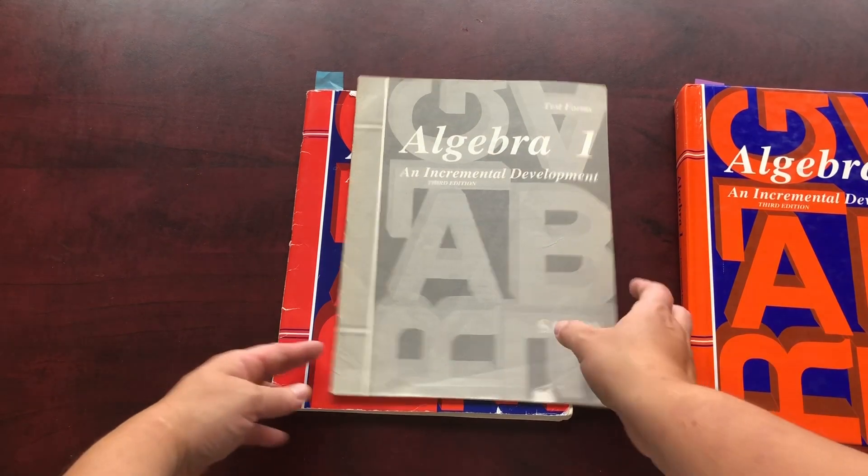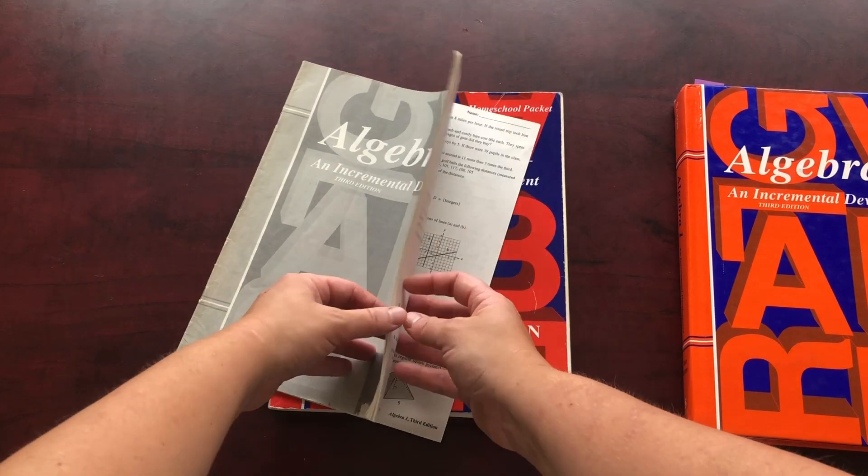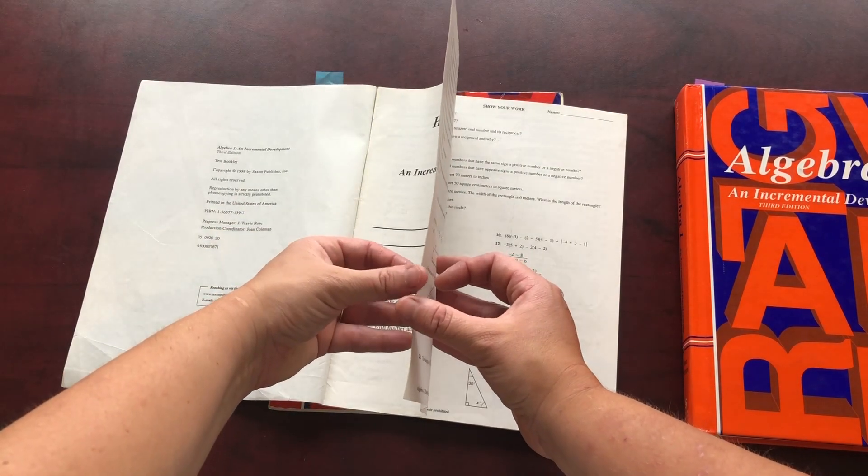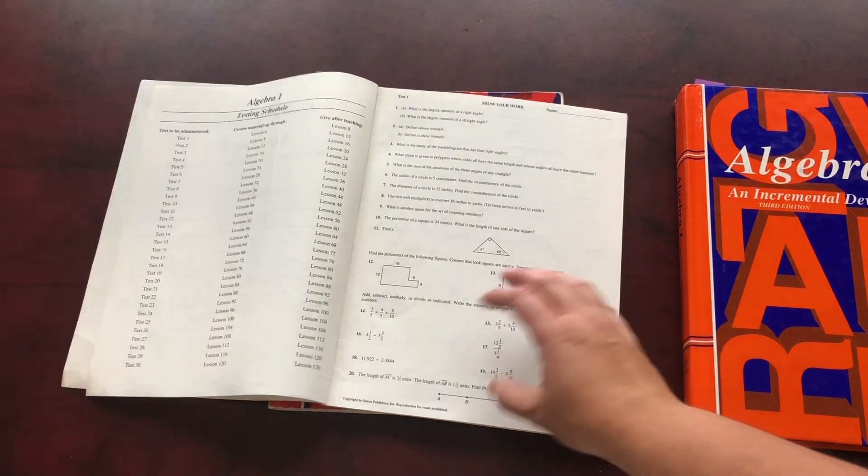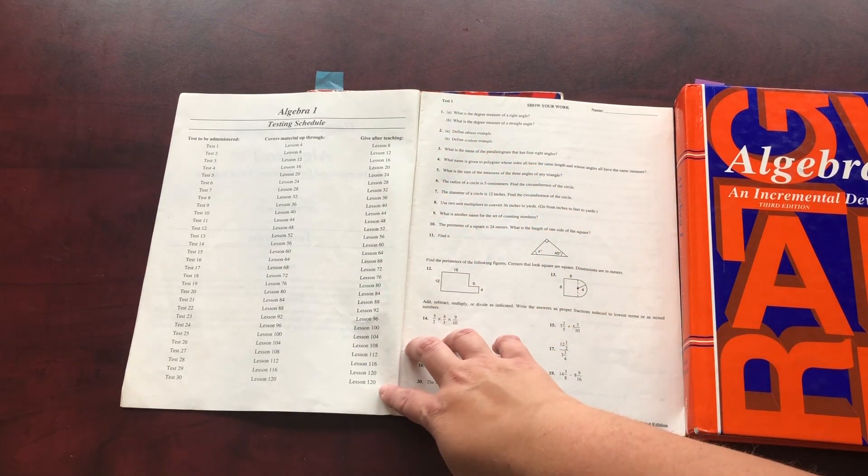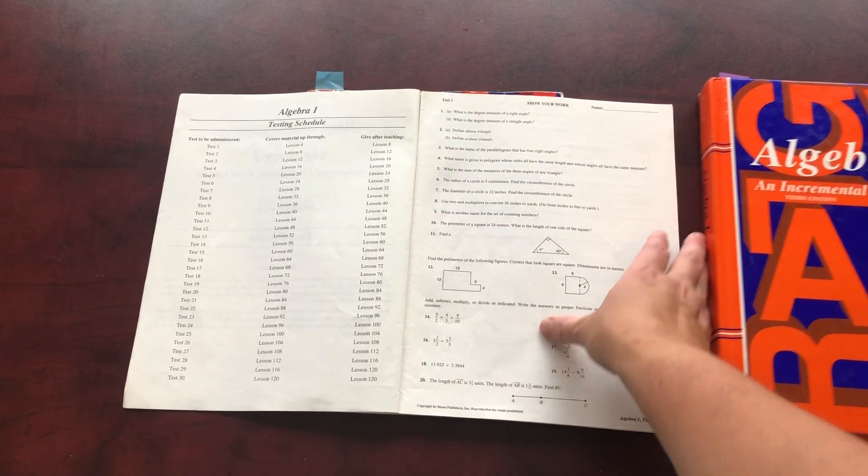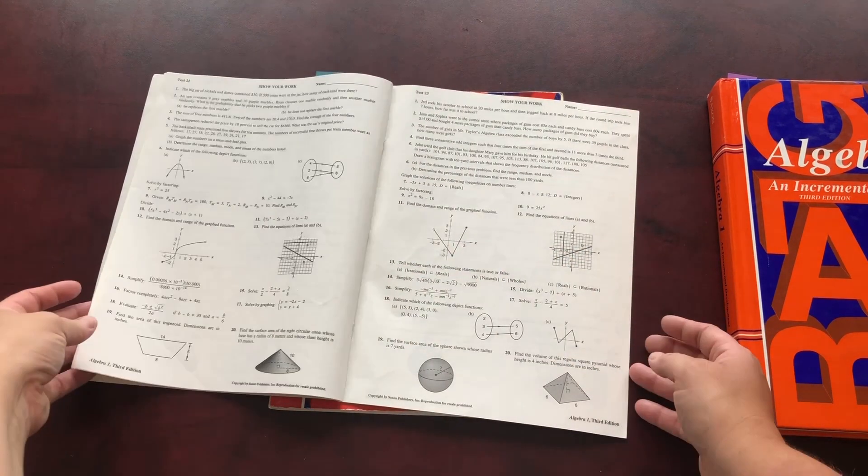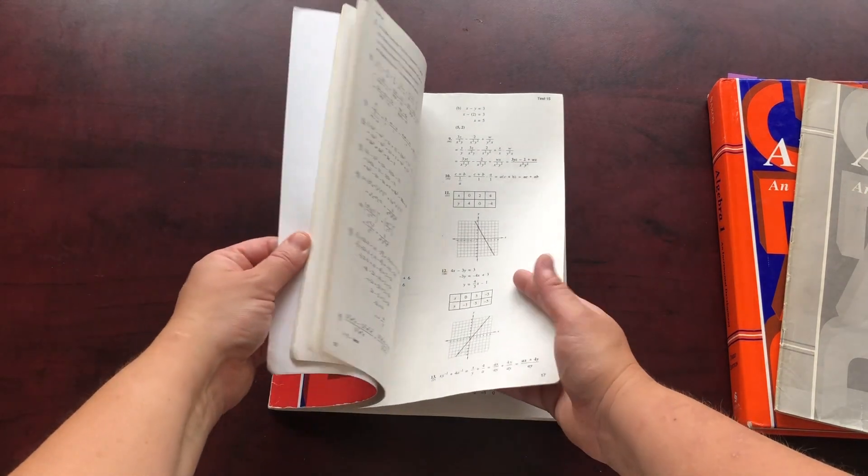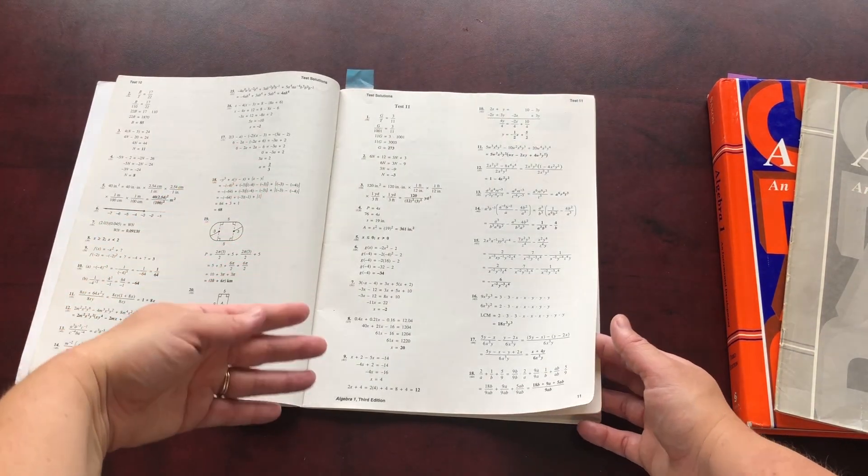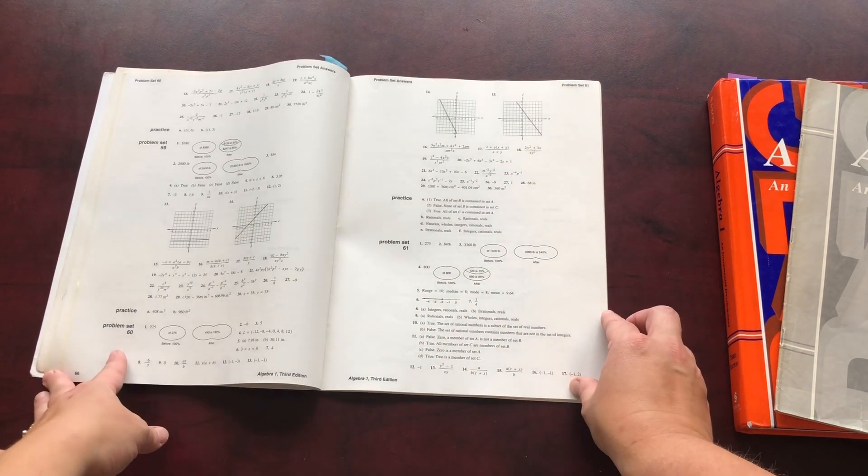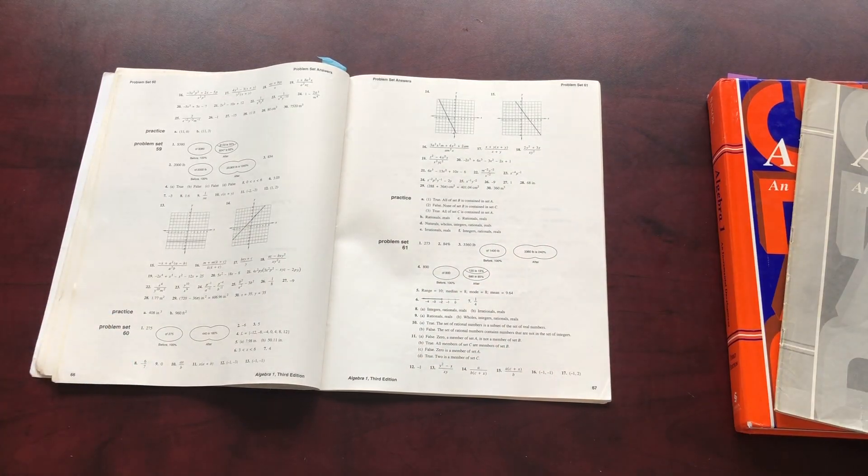Again, there are the test forms. The testing schedule is the same. You're going to be starting after lesson eight and giving them every four lessons, 30 tests in this one. These are what the tests look like. This is the same book in that it has the test answers explained here. And it has just the simple answers for the problem sets here.